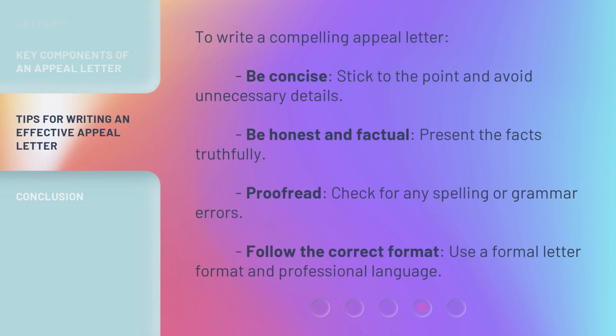To write a compelling appeal letter: 7. Be concise — stick to the point and avoid unnecessary details. 8. Be honest and factual — present the facts truthfully. 9. Proofread — check for any spelling or grammar errors. 10. Follow the correct format — use a formal letter format and professional language.